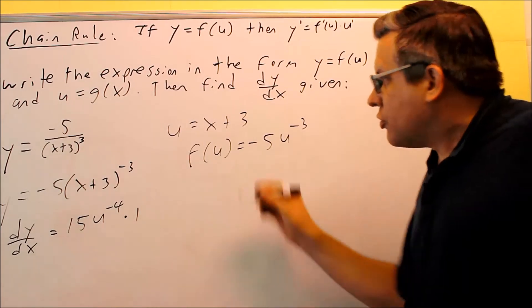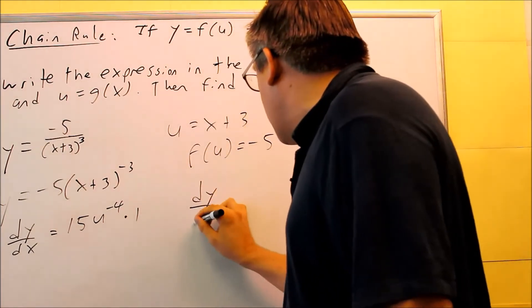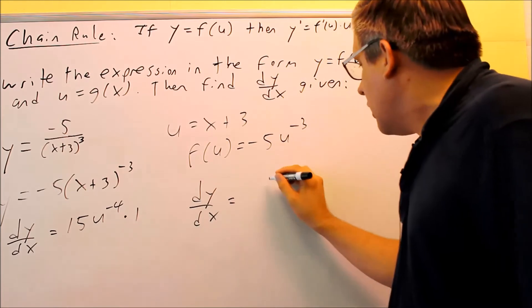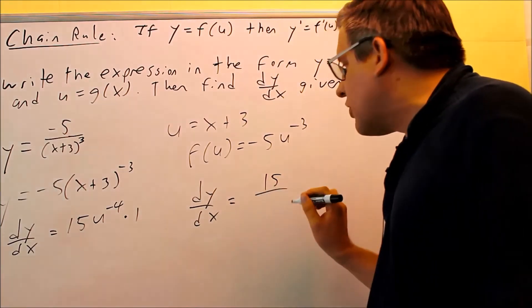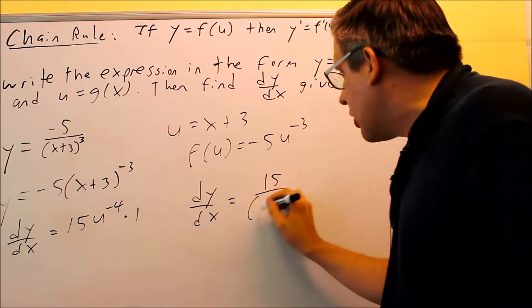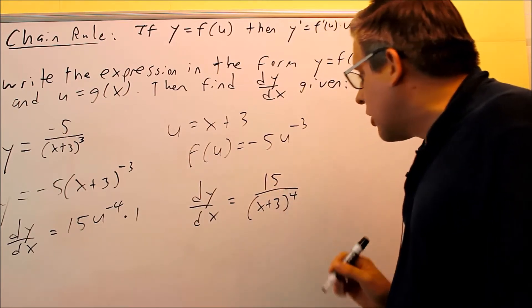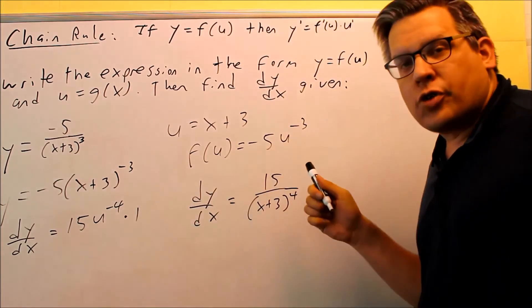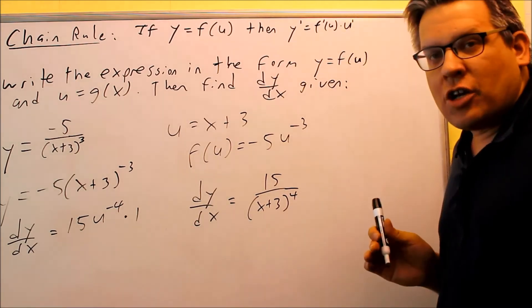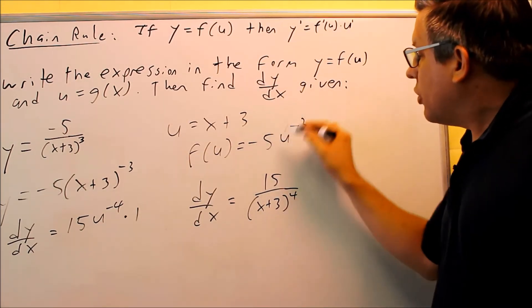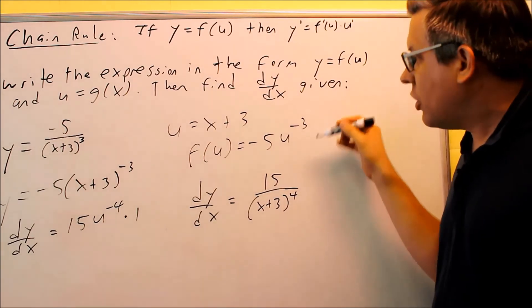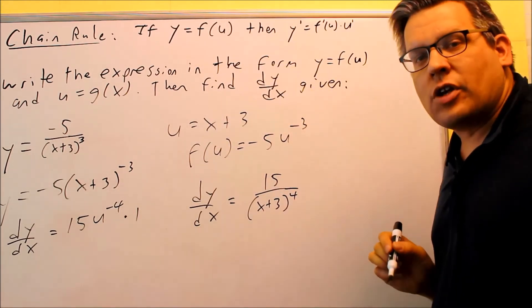Finally, what you'll do is you'll just plug the u back in, and you'll write your answer dy dx is equal to 15, it'll be 15 over u to the fourth, instead I'm going to go ahead and put in x plus 3, and write that to the fourth power. And so this would be your derivative. We've applied the chain rule by using the outside function, we did the derivative here using power rule, and then we multiplied it by the derivative of the inside.